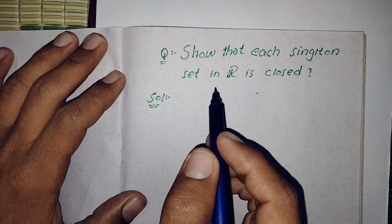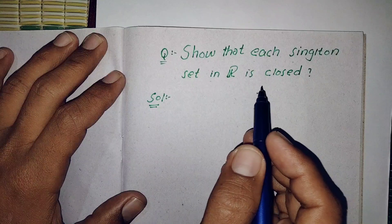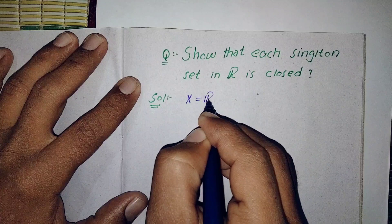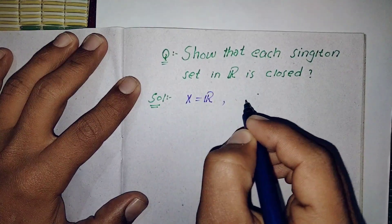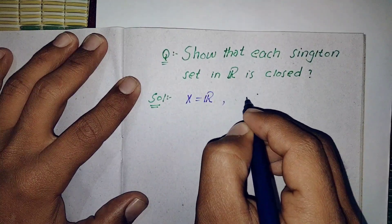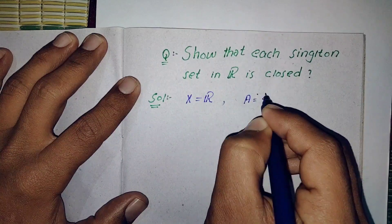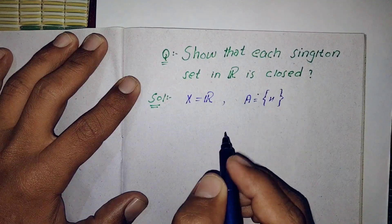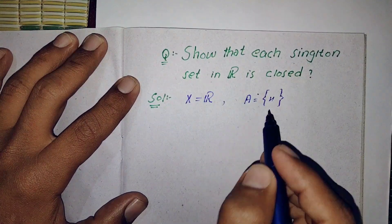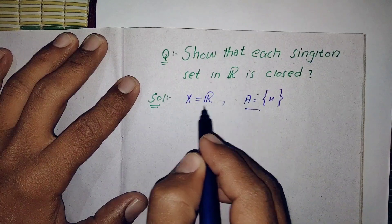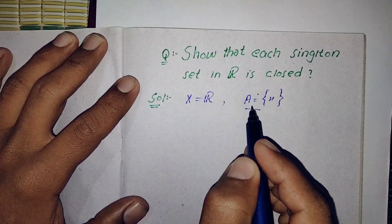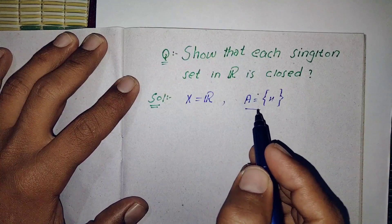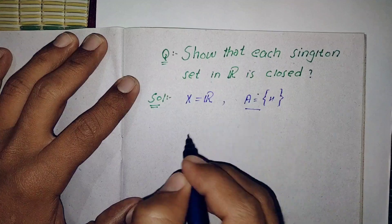To show that each singleton set in R is closed, we will first take the ground set as R. Now let A = {x} be any arbitrary singleton set. To show that A is closed in R, it is enough to show that A complement is open, because the complement of an open set is a closed set. So now we will find A complement.